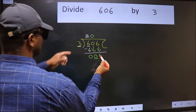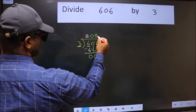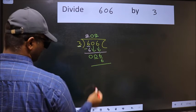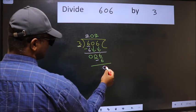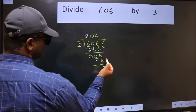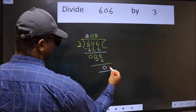Now 6. When do we get 6 in the 3 table? 3 twos are 6. Now we should subtract. We get 0. No more numbers to bring it down, so we stop here.